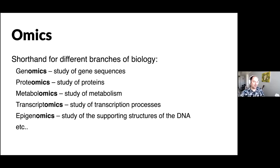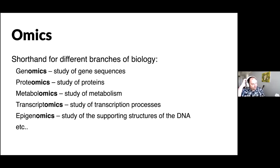Omics is a shorthand for different branches of biology. The most common is genomics — the study of gene sequences — but there's also proteomics, the study of proteins; metabolomics, the study of metabolisms and metabolites; transcriptomics, the study of transcription processes; epigenomics, the study of the supporting structure of DNA; and others. Much of this comes down to data about inherited traits.